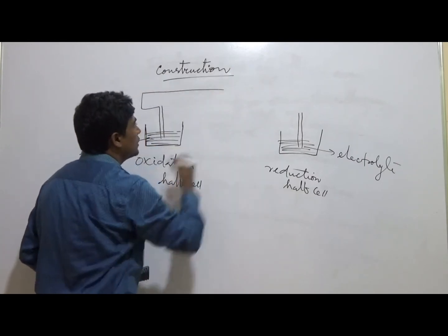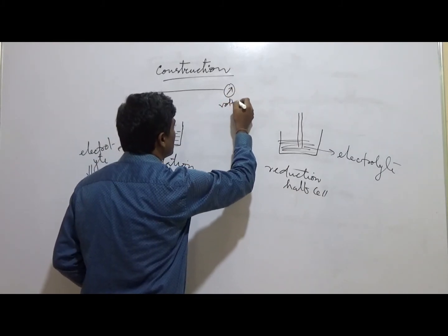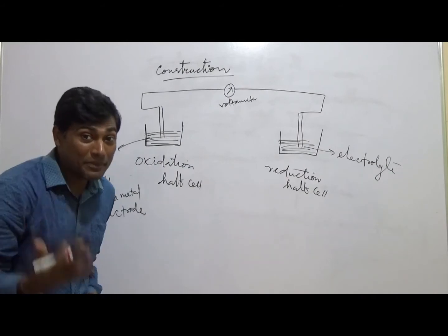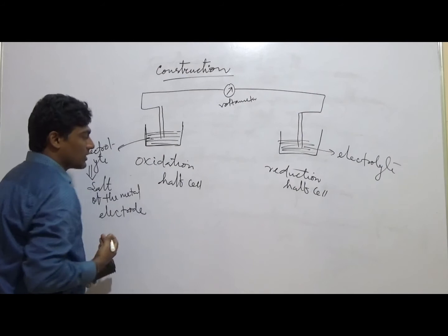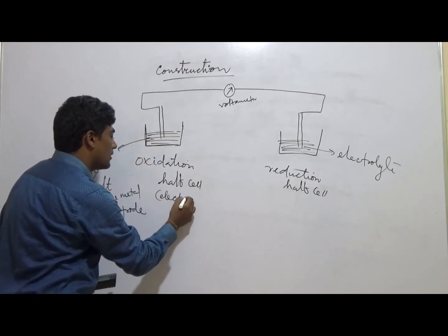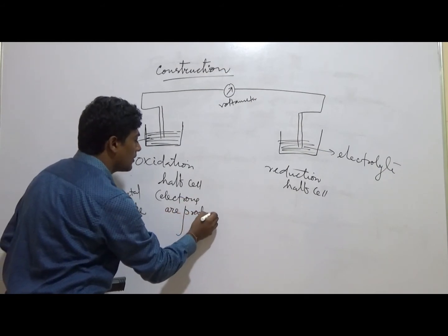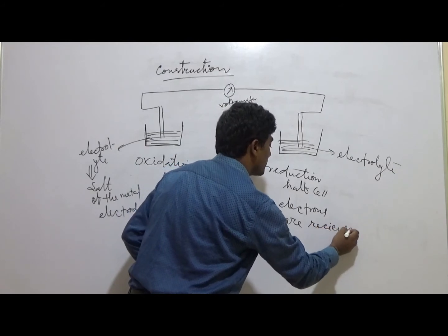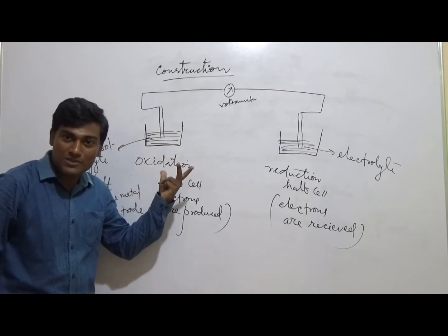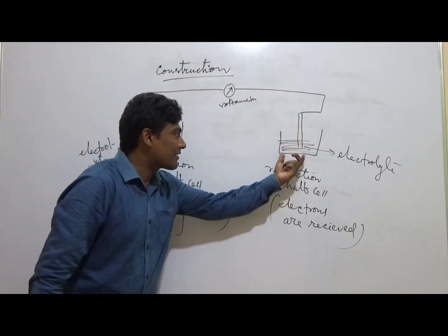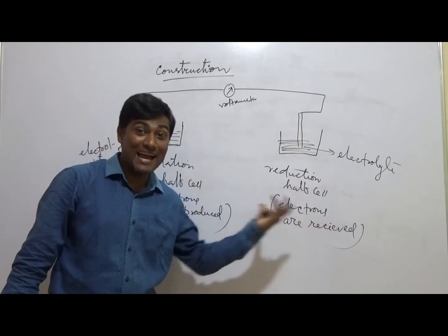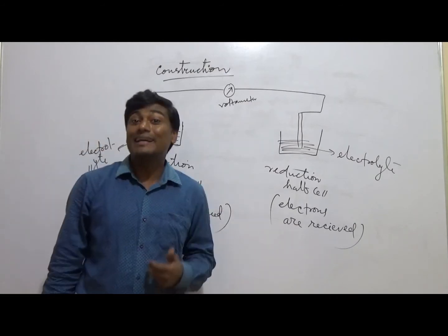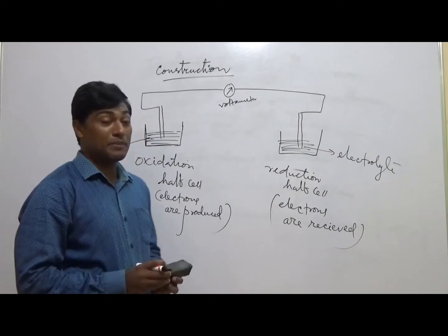Both electrodes of the two half cells are joined through a voltmeter. When oxidation occurs, electrons are produced in the oxidation half cell. They flow through the wire and are received in the reduction half cell. The oxidation and reduction reactions take place in separate chambers — that is why we call it an indirect redox reaction.